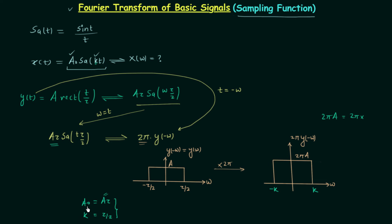The amplitude 2π·a can be written as 2π·(a0/τ). Since τ equals 2k, substituting gives 2π·a = 2π·a0/(2k), and the 2's cancel so 2π·a equals π·a0/k. So remember the Fourier transform of the sampling function and the waveform of the Fourier transform. If you have any doubt you may ask in the comment section. I will end this lecture here, see you in the next one.